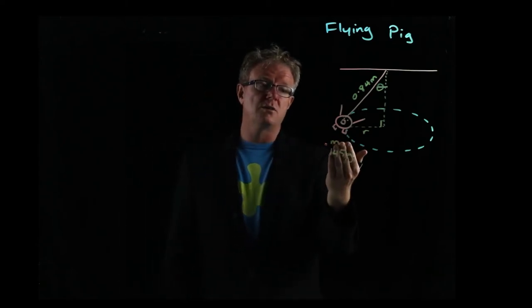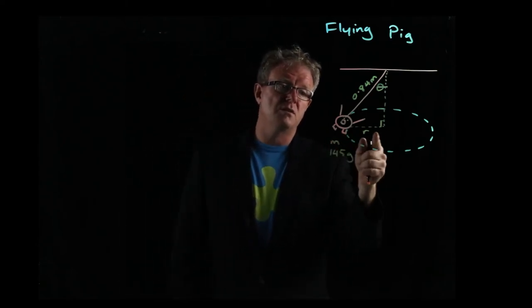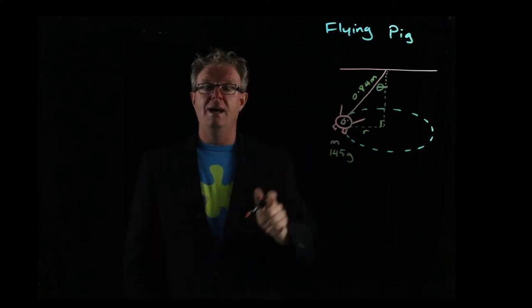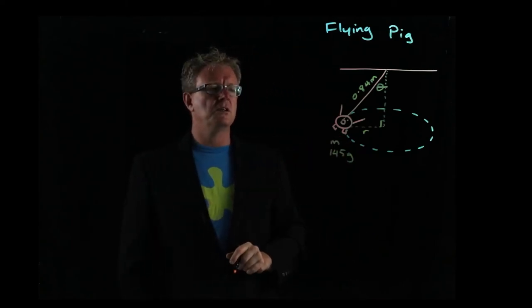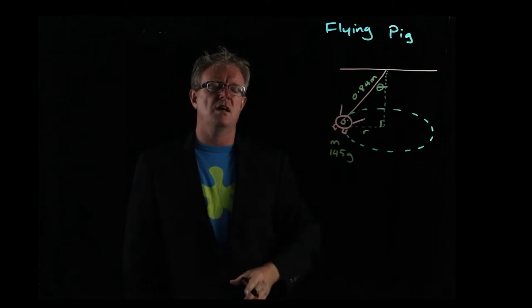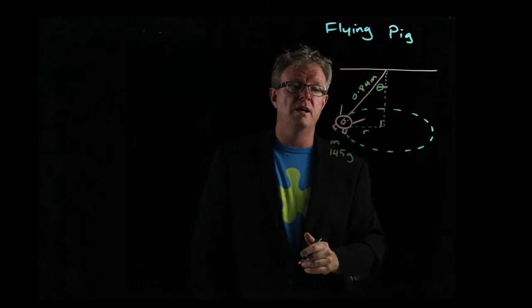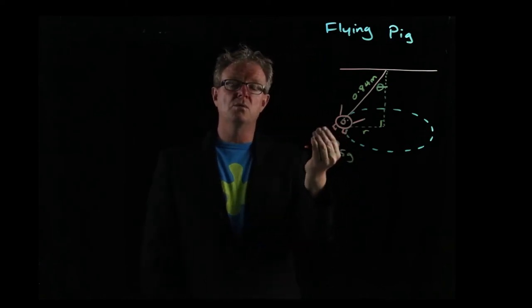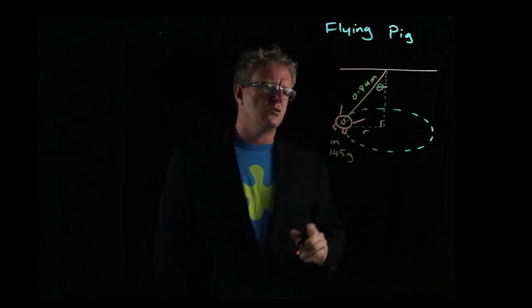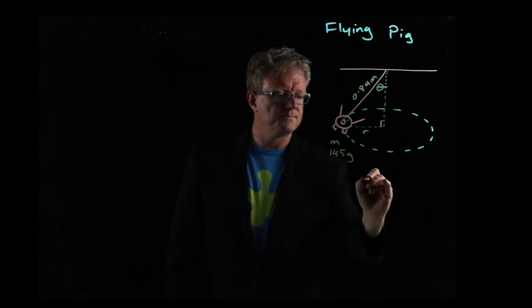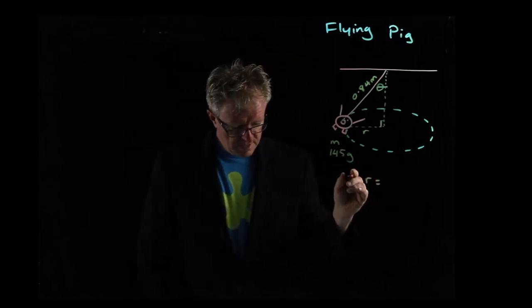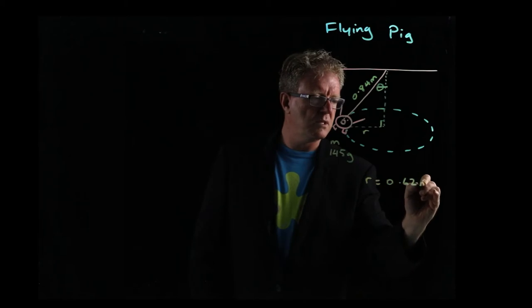So we get out our ruler and measure the radius. There's some experimental error in how students decide to measure it. They might take a picture as it's going around, use a scale, or just hold up a ruler. Let's just say they hold up the ruler and find that the radius is 0.62 meters.